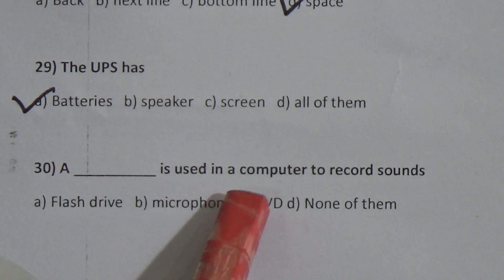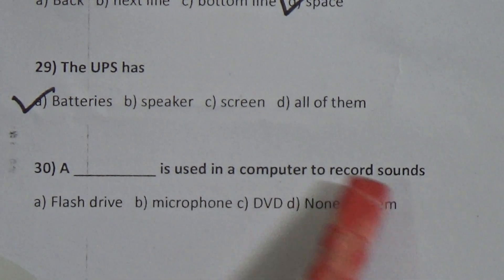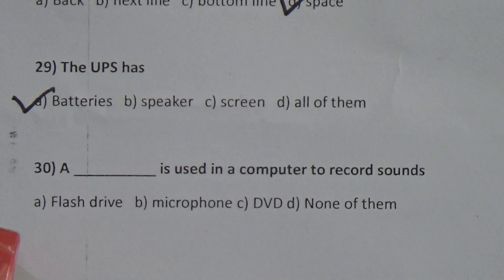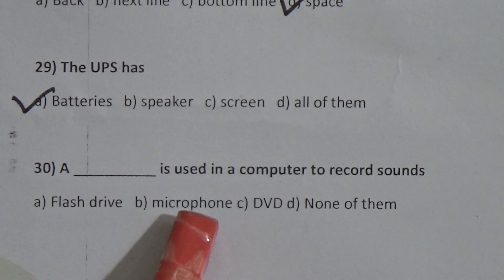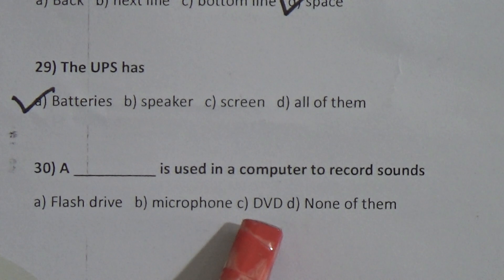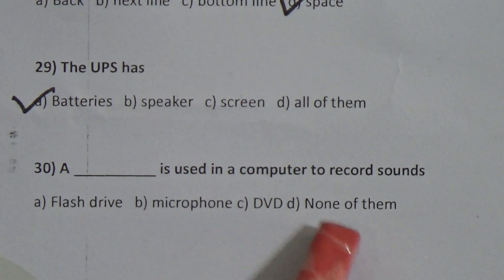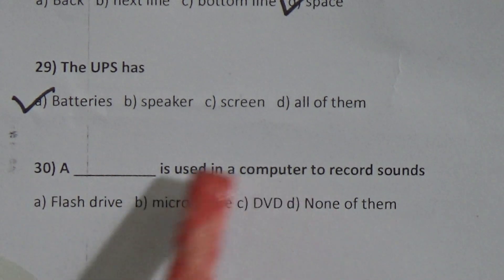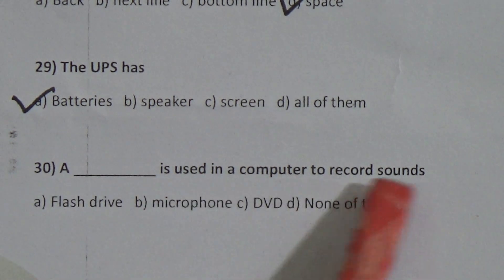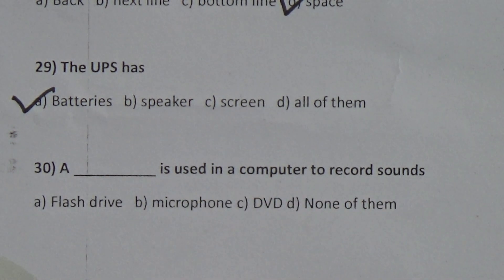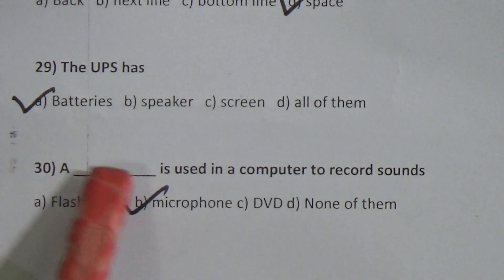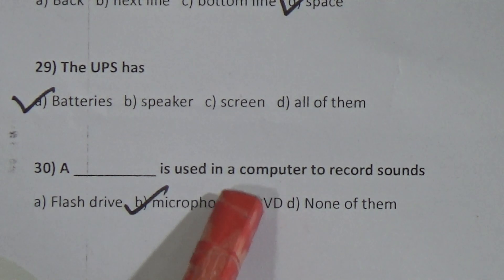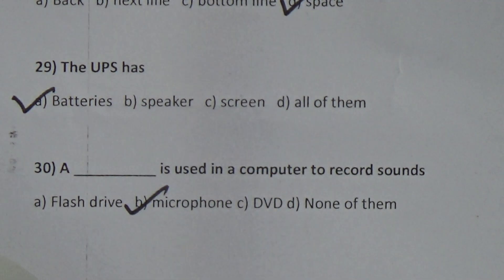Question 30: A dash is used in a computer to record sound. Options: A) flash drive, B) microphone, C) DVD, D) none of them. The correct answer is B — a microphone is used in a computer to record sound.